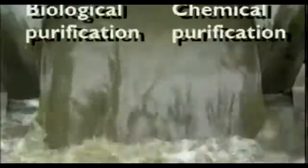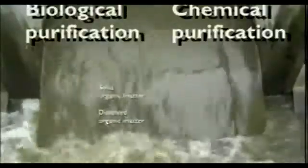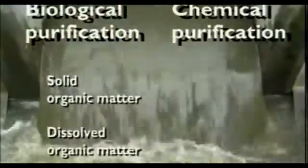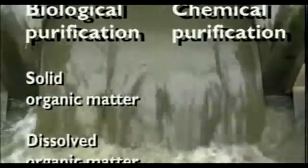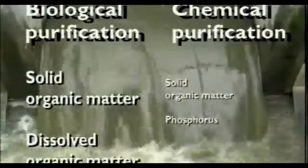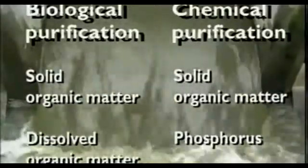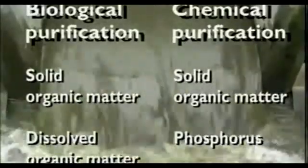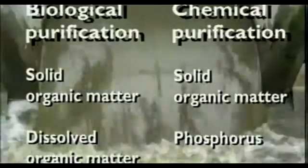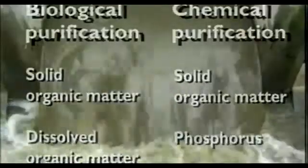Chemical and biological treatment work in different ways and achieve different results. The biological process removes both dissolved and solid organic matter. The chemical process removes solid organic matter and phosphorus. We have to determine the major causes of oxygen deficiency in waters and select the treatment process in accordance with local environmental requirements.